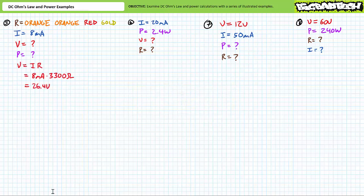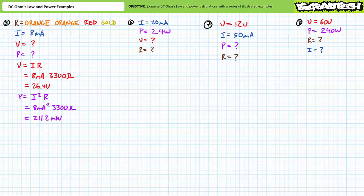Our first problem features a resistor with a color code of orange, orange, red, gold, known to be experiencing 8 milliamps of current. We're being asked to solve for the voltage drop across it and the power dissipated by it. A color code of orange, orange, red means 3, 3 followed by two zeros — or 3,300 ohms, or more appropriately, 3.3 kilohms. Voltage is equal to current times resistance. Substituting in our given values demonstrates this resistor must be experiencing a differential of 26.4 volts. Power is equal to current squared times resistance. Substituting in our given values demonstrates this resistor must be dissipating 211.2 milliwatts of power. The supporting calculation verifies these results, where resistance is equal to voltage squared divided by power. Substituting in our calculated values does indeed yield 3.3 kilohms of resistance.